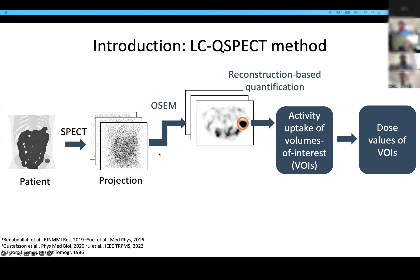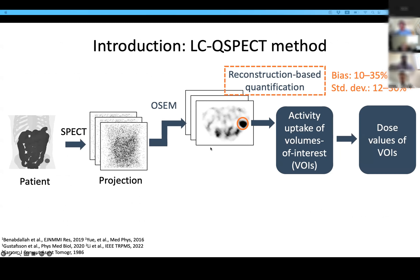Conventional quantitative SPECT methods are usually based on reconstructed images. The uptake of VOIs are estimated by averaging voxel values within each region. However, this approach was observed to be not optimal in alpha-RPTs, yielding high bias and variance in previous studies. The task is to estimate a small number of VOI uptakes, but this reconstruction-based approach requires an intermediate step to estimate a large number of voxel values from a limited number of detected counts. This intermediate reconstruction step also complicates the compensation of SPECT physics.